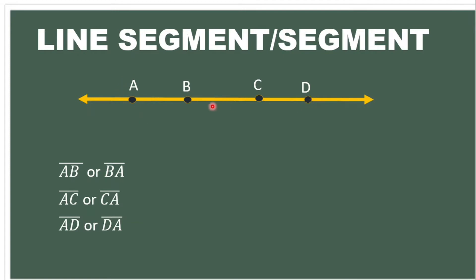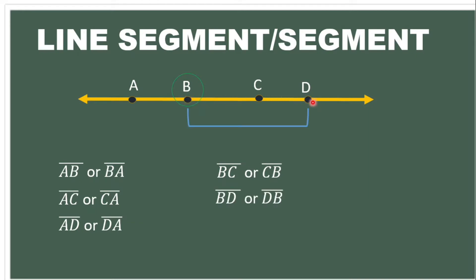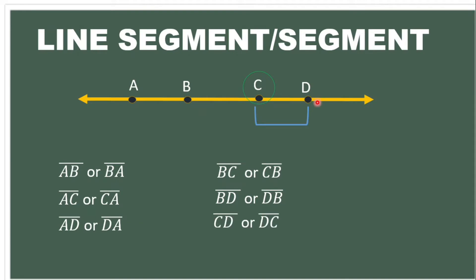Next, let us take point B. What line segments can we form from point B? From point B to point C, we have line segment BC or CB. We will not go back to point A since line segment BA is already listed. Next, from point C, we have line segment CD or DC.